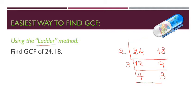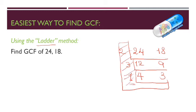Now I will make another L. We have 4 and 3. What is the prime number common between 4 and 3? Can we divide both by 2? No. By 3? Also no. So the only number that is common is 1. Once I reach 1, I will stop and make a big L. I will take the numbers on the left side of the L: 2, 3, and 1. The GCF is these numbers multiplied together: 2 times 3 times 1.